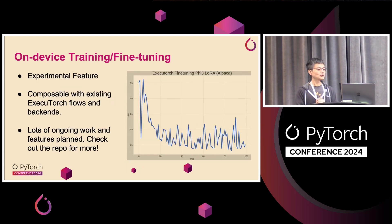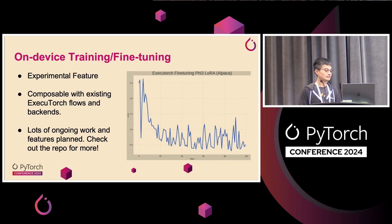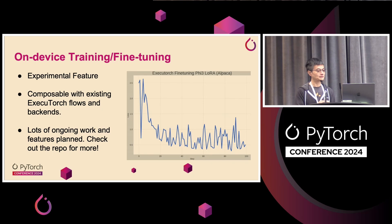Second update: we are working on an experimental feature of on-device training and fine-tuning. By design, this is composable with existing ExecuTorch flows and backends. We show the convergence of the loss when fine-tuning the LLaMA 3.2 model on-device. Since it's a proof of concept, there is a lot of ongoing work and features planned — stay tuned on our repo for more.